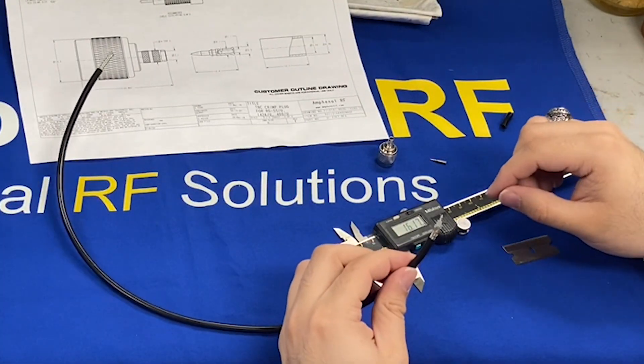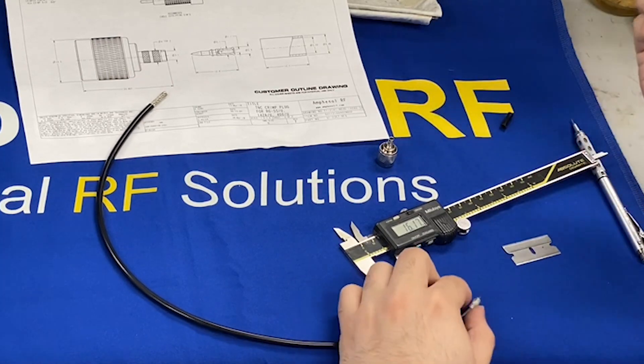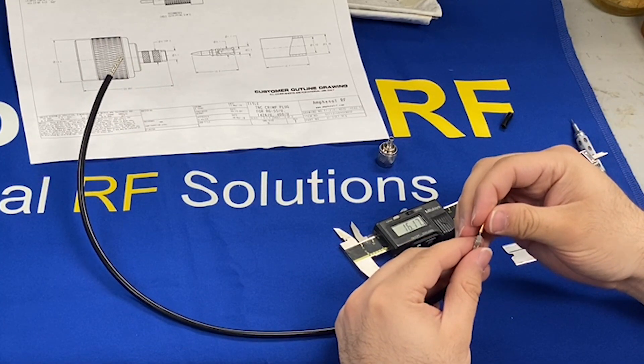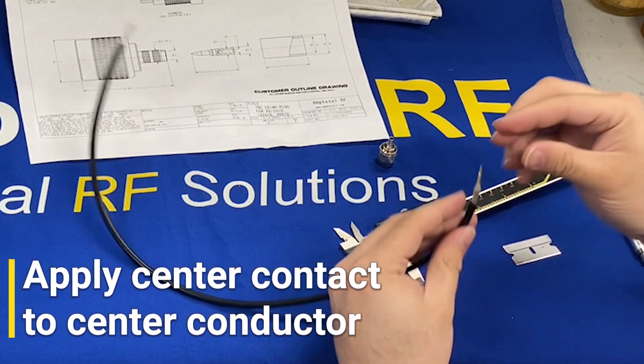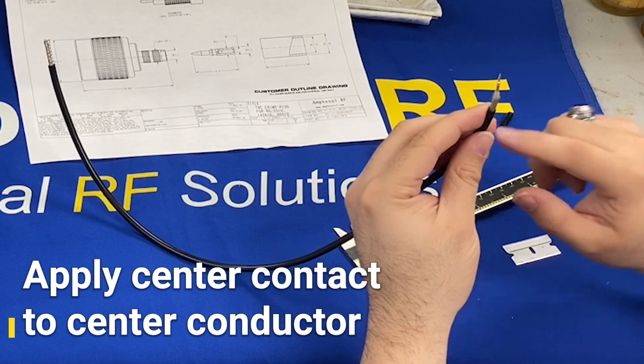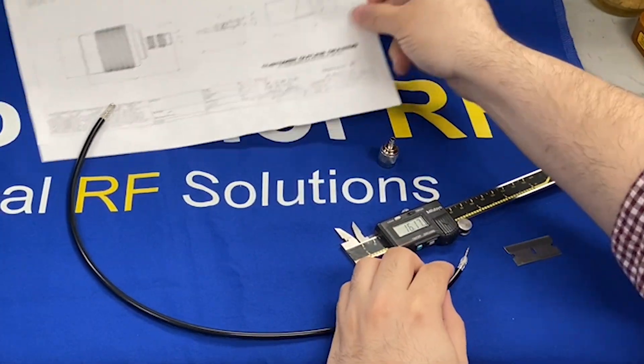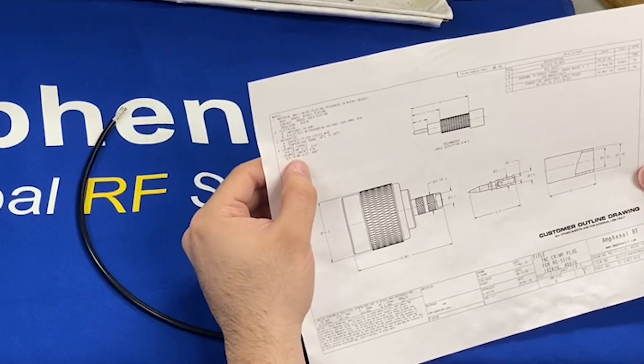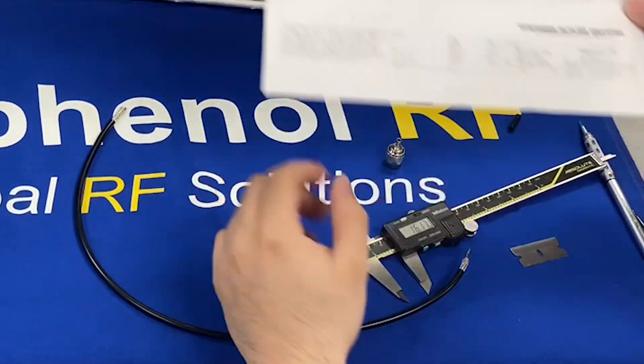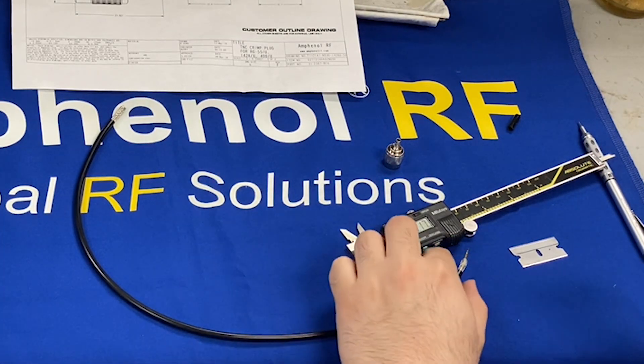This end of the cable has been pre-prepared. We will now take our center contact and apply it to the center conductor, being sure that the contact bottoms on the cable dielectric evenly. According to this customer outline drawing, the contact may be crimped. So we will be crimping this one today. If there is no crimping note present on the COD, then that means the contact must be soldered.